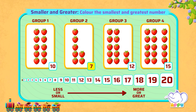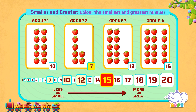Which group has the greatest number of strawberries? The number 15 is greater than 10, 7, and 12. So, group 4 has the greatest number of strawberries.